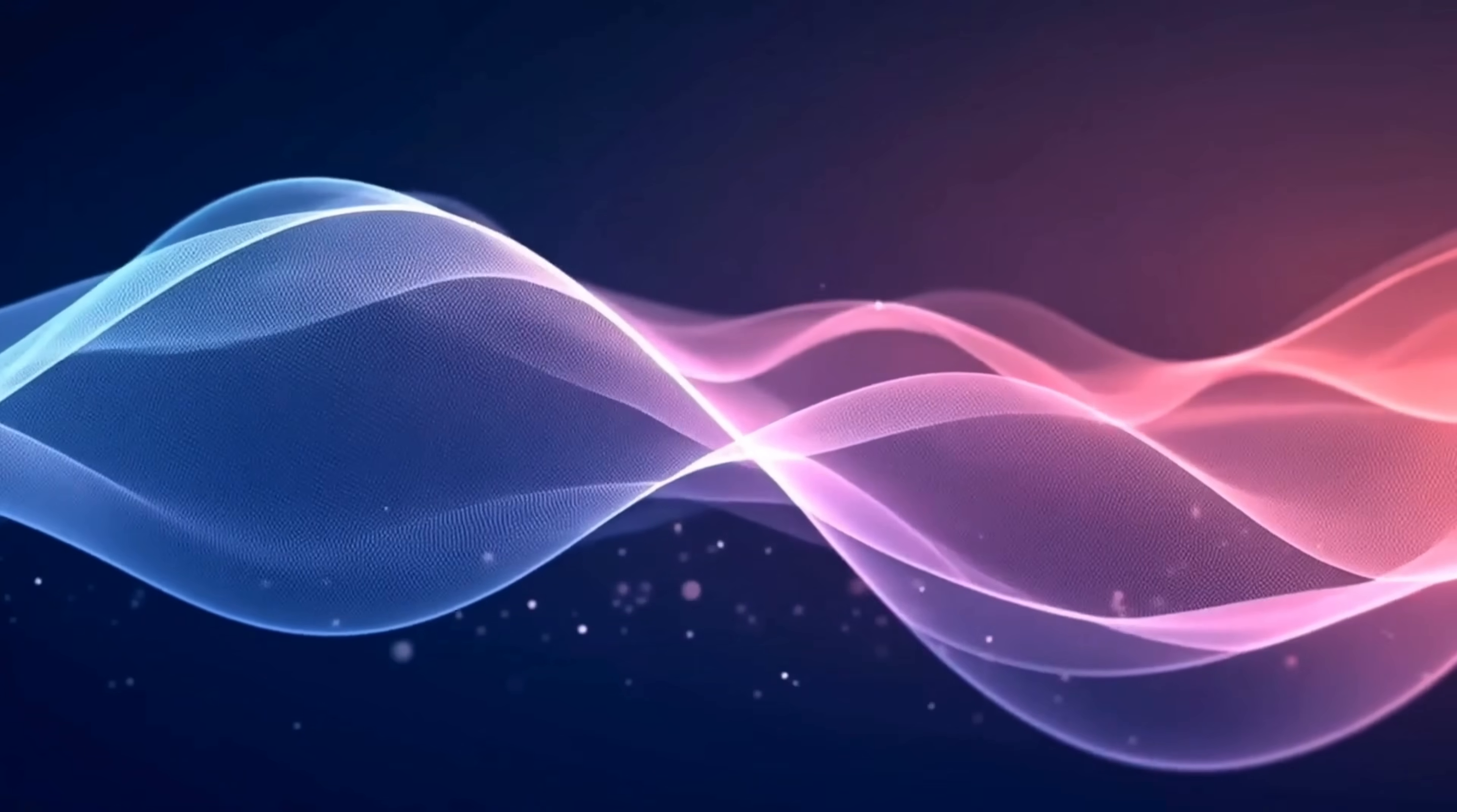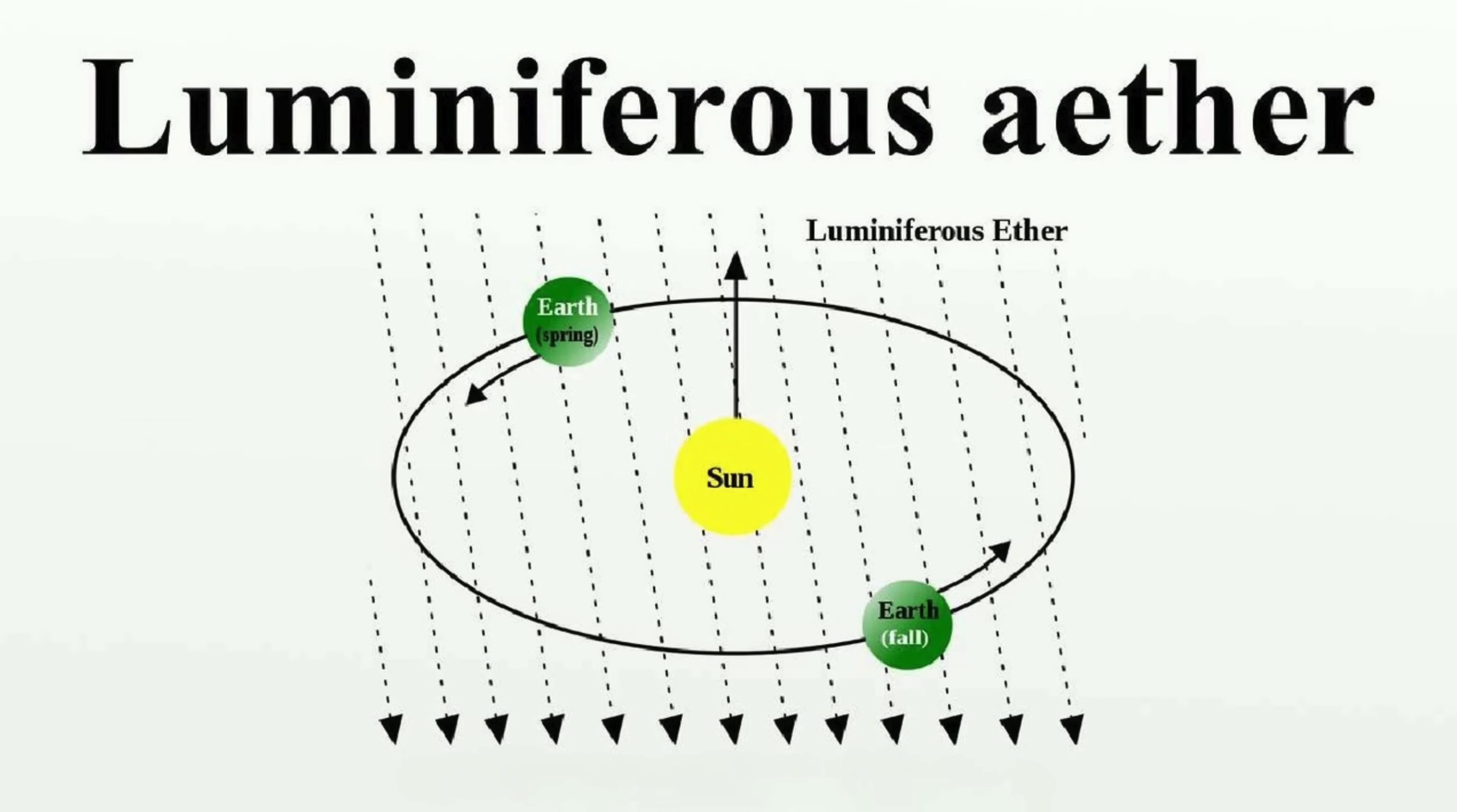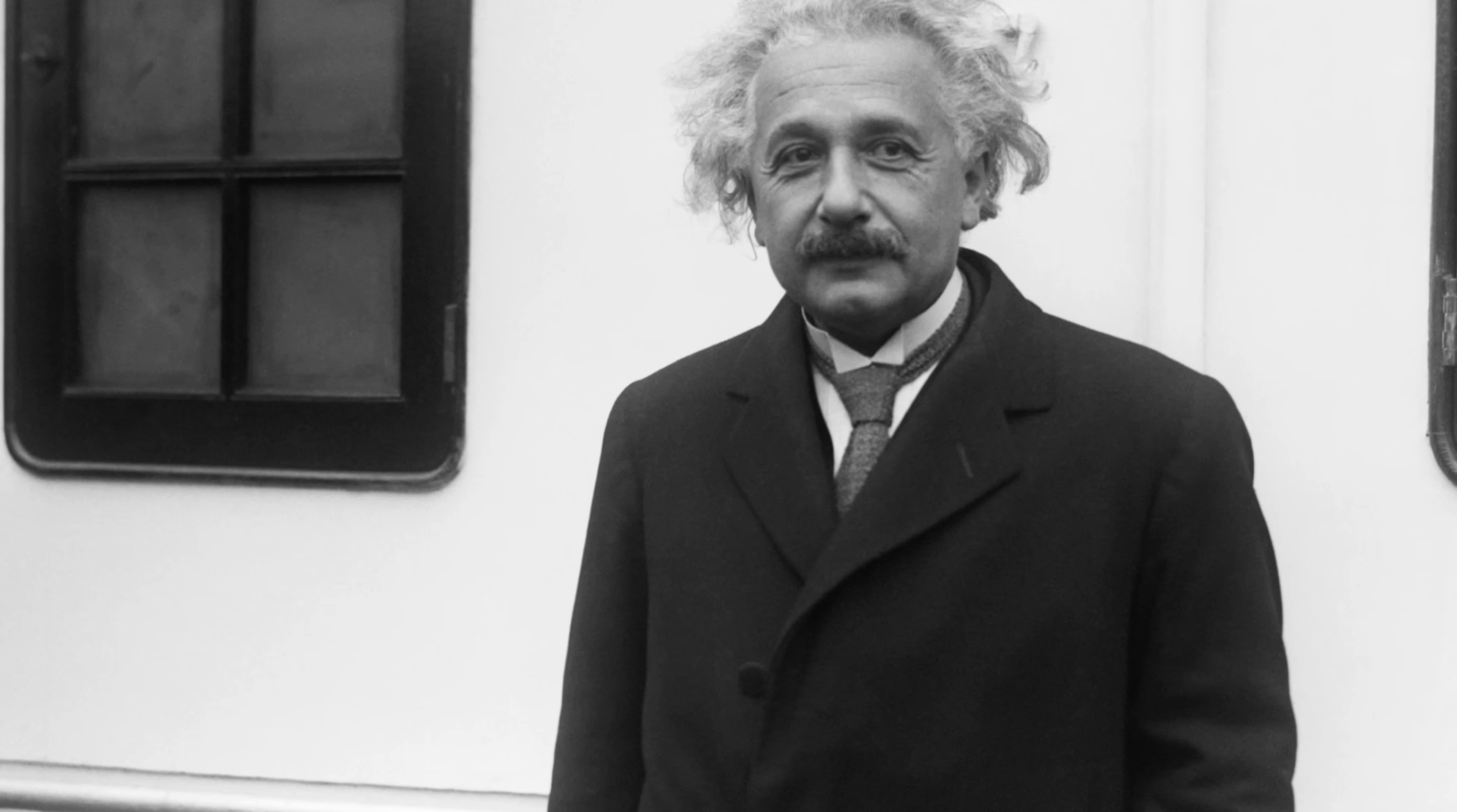That's what scientists thought for over a hundred years. Young's experiment seemed to prove beyond doubt that light was a wave. No one questioned it. At the time, many scientists believed light waves needed a medium to travel through called the luminiferous aether. This idea persisted for decades until the Michelson-Morley experiment in 1887 found no evidence of such a medium. This unexpected result set the stage for Einstein's theory of relativity, proving that light needed no medium at all.